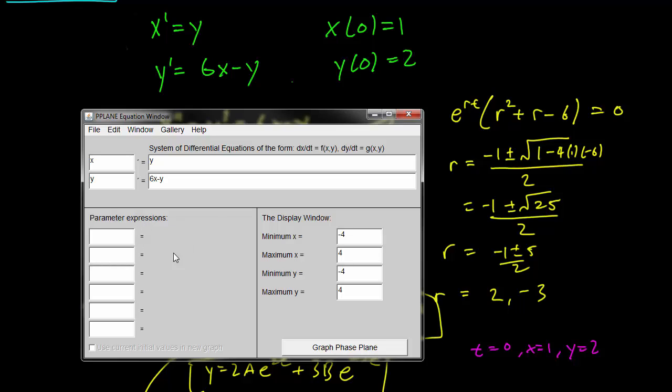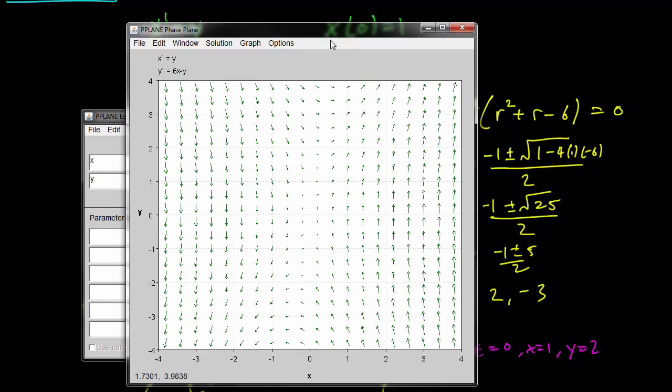Just ignore everything in the bottom left. I don't think you need to use that. The display window is pretty self-explanatory. It means that the window you'll see will go from x minus 4 to 4 and y minus 4 to 4. Let's see what happens when we get the phase plane.